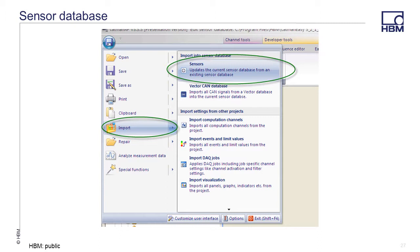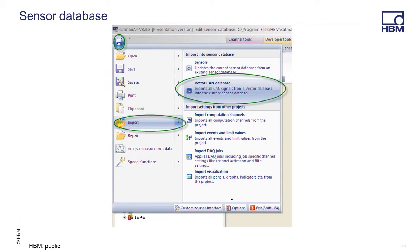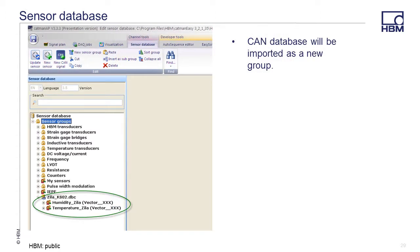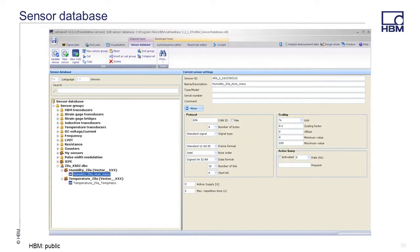If you have an existing sensor database, it can be imported into the CATMAN EZ sensor database. Click on the file icon, then select Import Sensors. Browse to the file location and select the file. If you have a Vector CAN database, it can be imported into the CATMAN EZ sensor database by clicking File, then selecting Import Vector CAN database. Browse to the file location and select the file. After importing, the CAN database will appear in the sensor database groups. The CAN database Zilla-KSO2 was imported — it contains two channels of data, one for humidity and one for temperature. If a Vector CAN database file is not available for your CAN sensor, you can enter the protocol information manually.